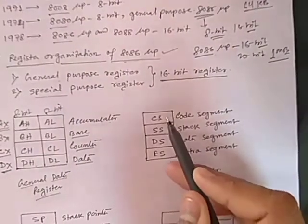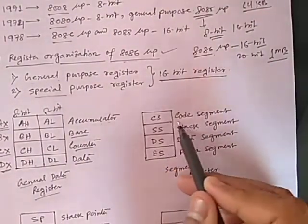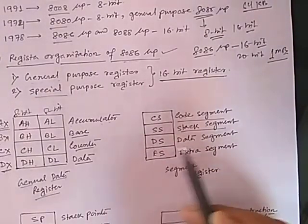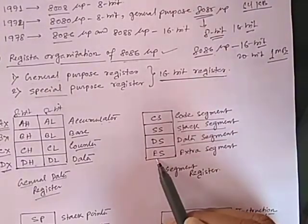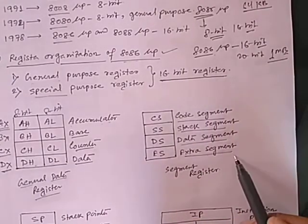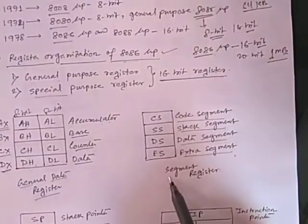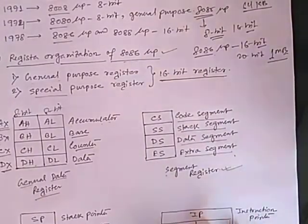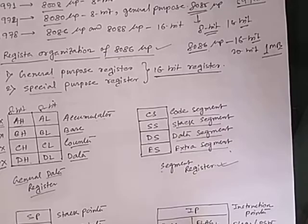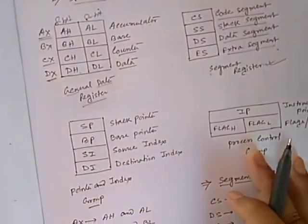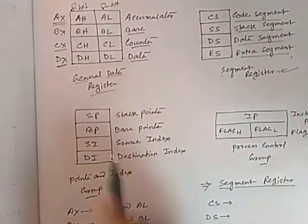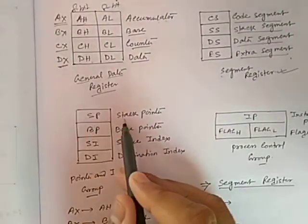There are four segment registers: CS (code segment register), SS (stack segment register), DS (data segment register), and ES (extra segment register). The functions of these different registers will be discussed later. These are called the segment registers.